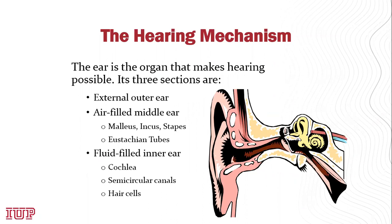The outer ear is what you can see, as well as the portion of the ear canal up to the eardrum. The middle ear is air-filled and contains three bones — the malleus, incus, and stapes — as well as the eustachian tube, which goes from the middle ear into the throat to balance pressure with atmospheric pressure. The inner ear is fluid-filled and contains the cochlea, the semicircular canals, and the hair cells. The hair cells are where hearing takes place, and in the case of noise-induced hearing loss, that's where damage occurs.